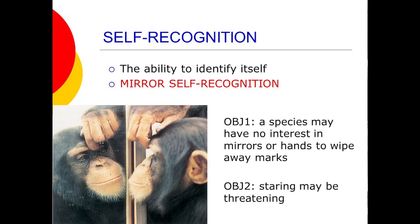The first one we'll look at is self-recognition — the ability to recognize oneself. The test for this is mirror self-recognition. Here you see a chimpanzee looking at itself in the mirror and touching a dot on its forehead.